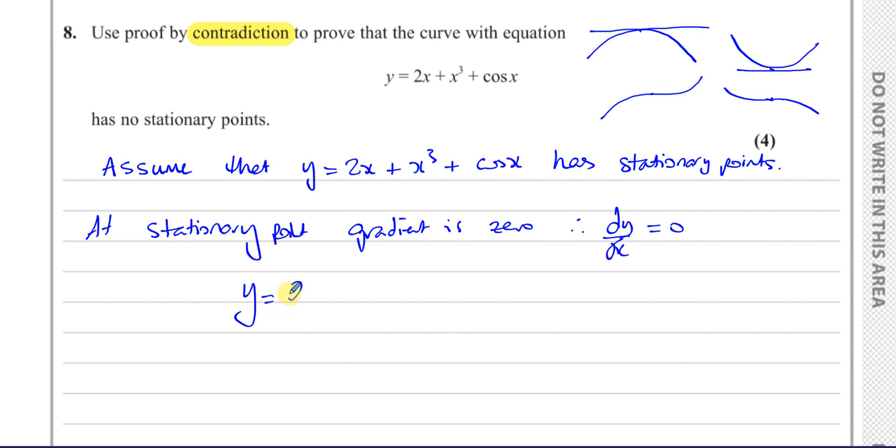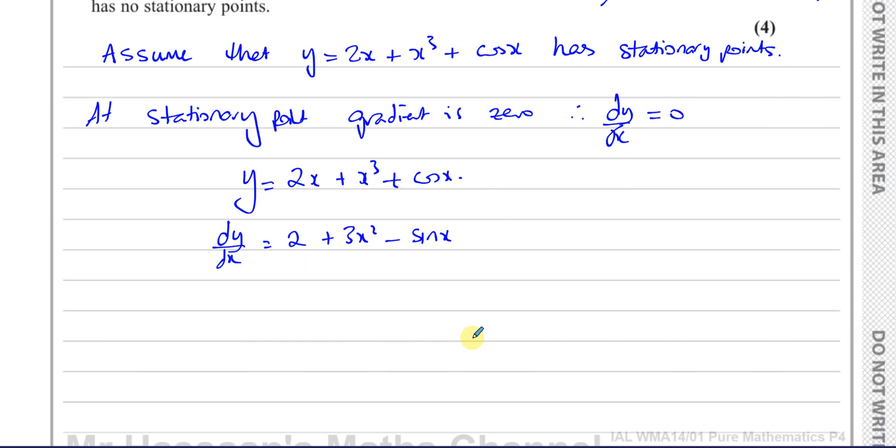So let's find dy/dx. So we have the function y equals 2x plus x cubed plus cosine x. So when we find dy/dx, that gives us 2 plus 3x squared. And if you differentiate cosine x, you get negative sine x. So minus sine x. So as we just mentioned, dy/dx will equal zero at the stationary point.